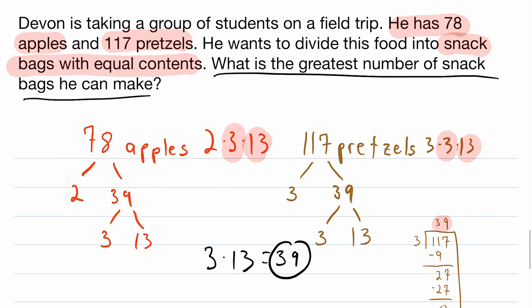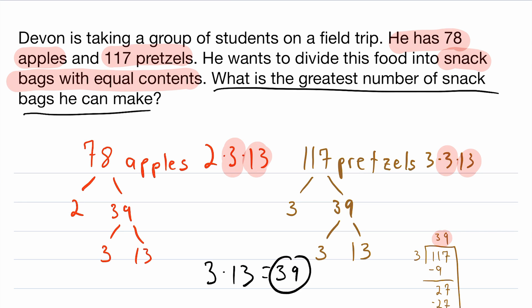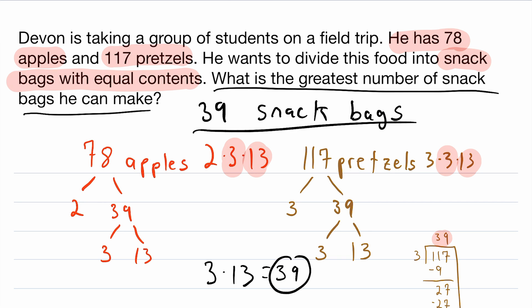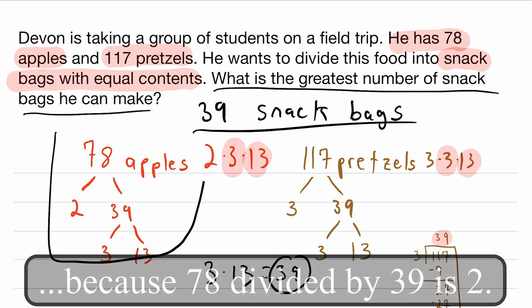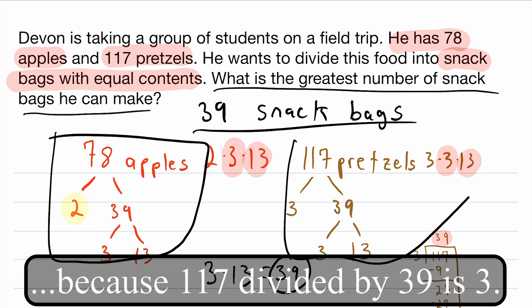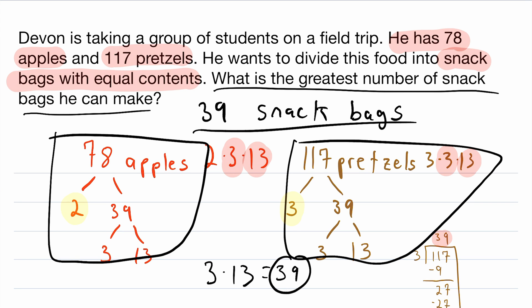Going back to the question, what's the greatest number of snack bags that Devin can make? That would be 39 snack bags. Each bag is going to contain 2 apples and 3 pretzels. That's a pretty disappointing snack bag with only 3 pretzels — but pretzels stink anyway, so it doesn't really matter.